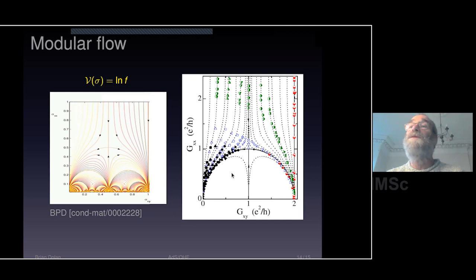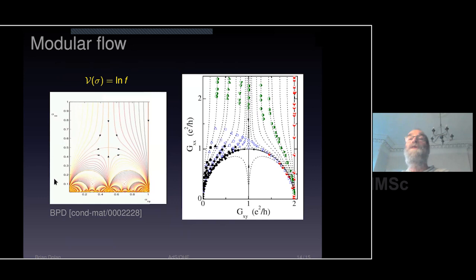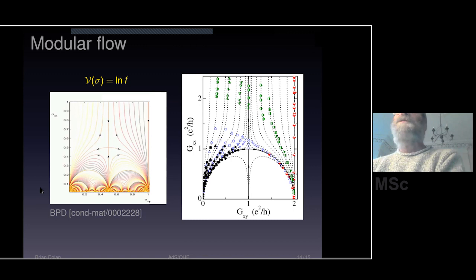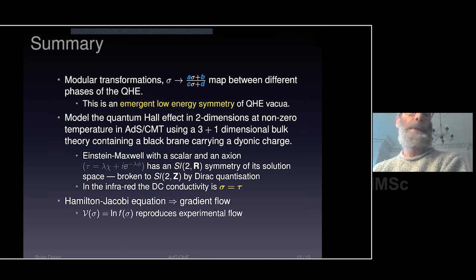The Marika Taylor solution gives the correct temperature flow at large σ_xx, but not at low σ_xx. The relationship between temperature flow and RG flow is not yet clear — it probably requires finding other solutions of the Gibbons-Rashid action or generalizations of it. This is ongoing work, but I hope this diagram convinces you there's probably something to this as an approach to the quantum Hall effect.